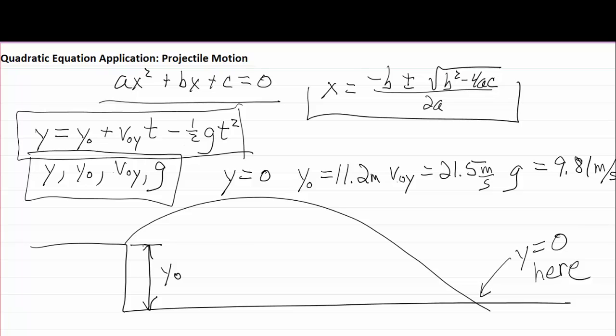Now there's something different from this about the quadratic equations you've solved before. The equations you've solved have all had x as the variable. In a projectile motion problem the variable is t which represents time.